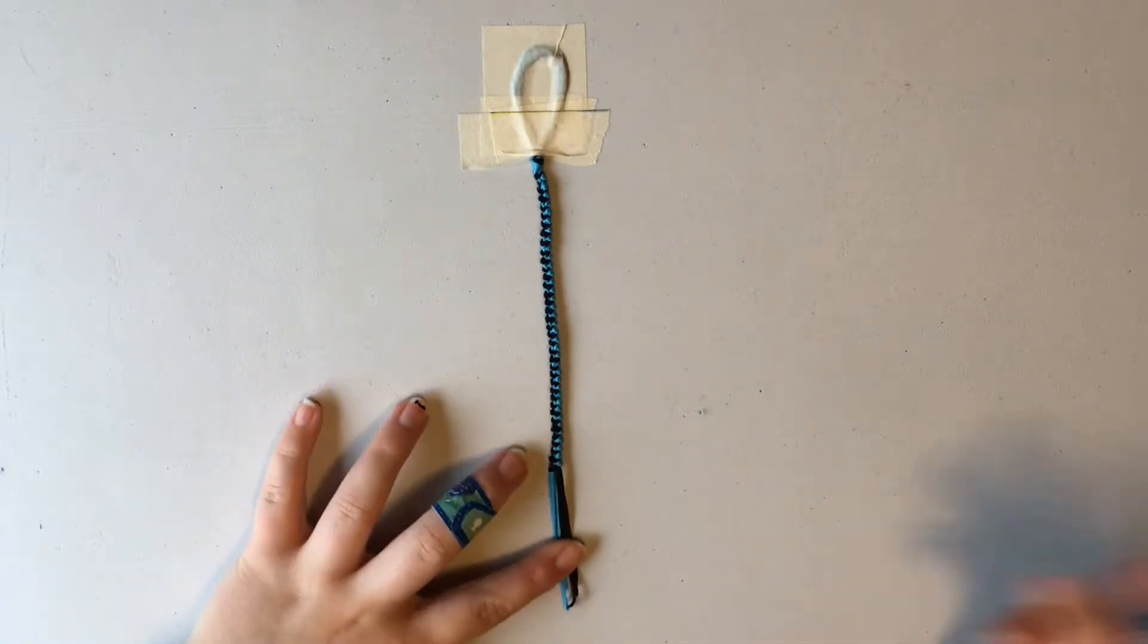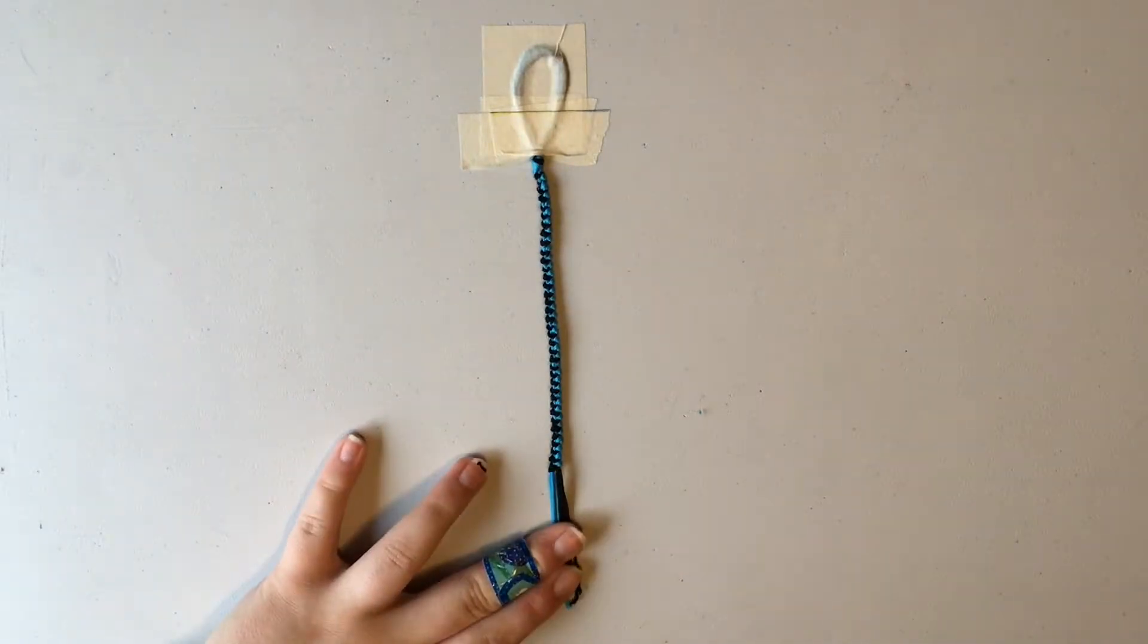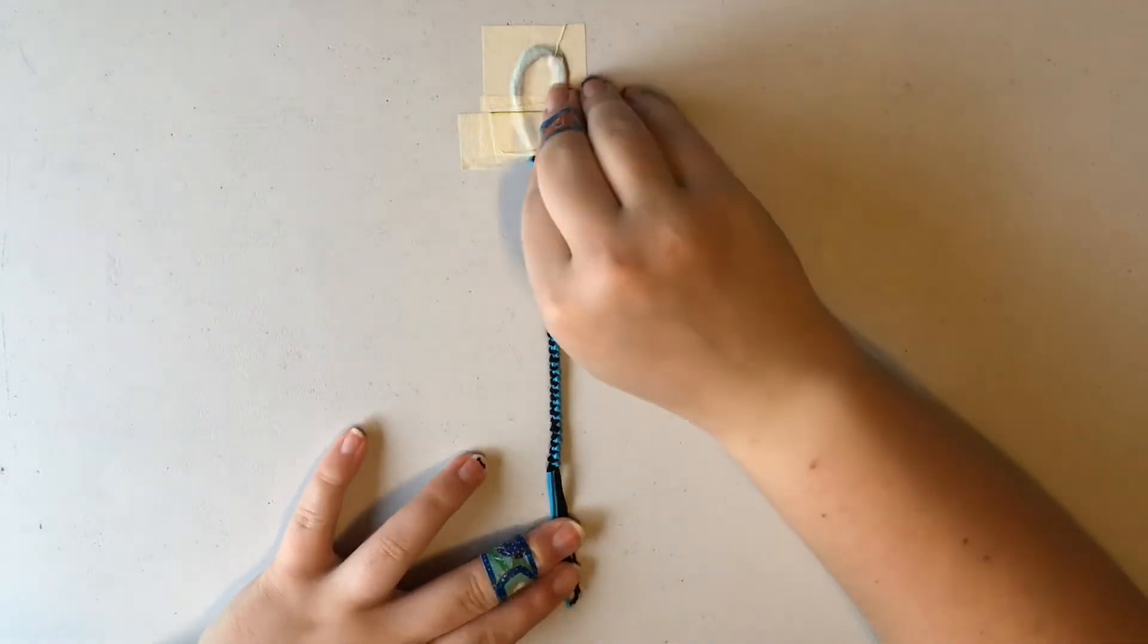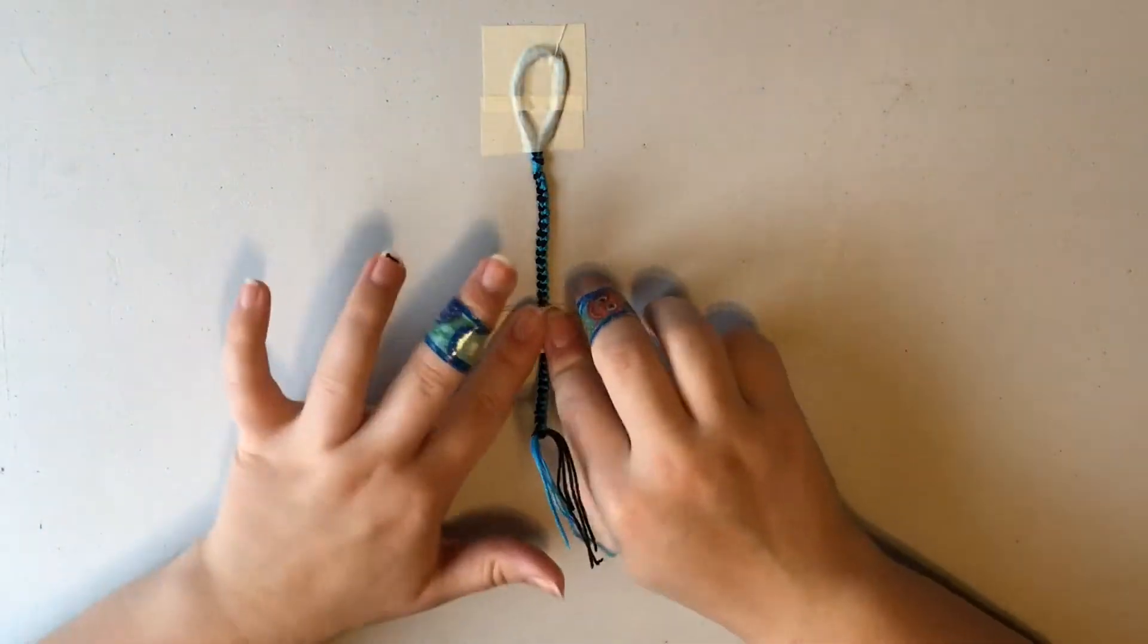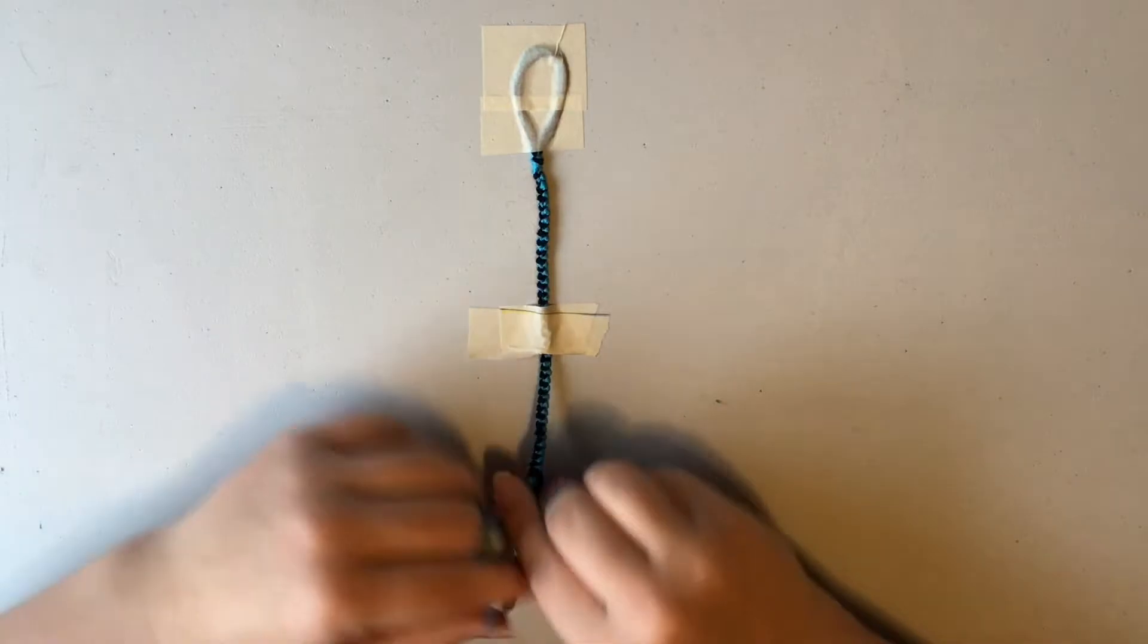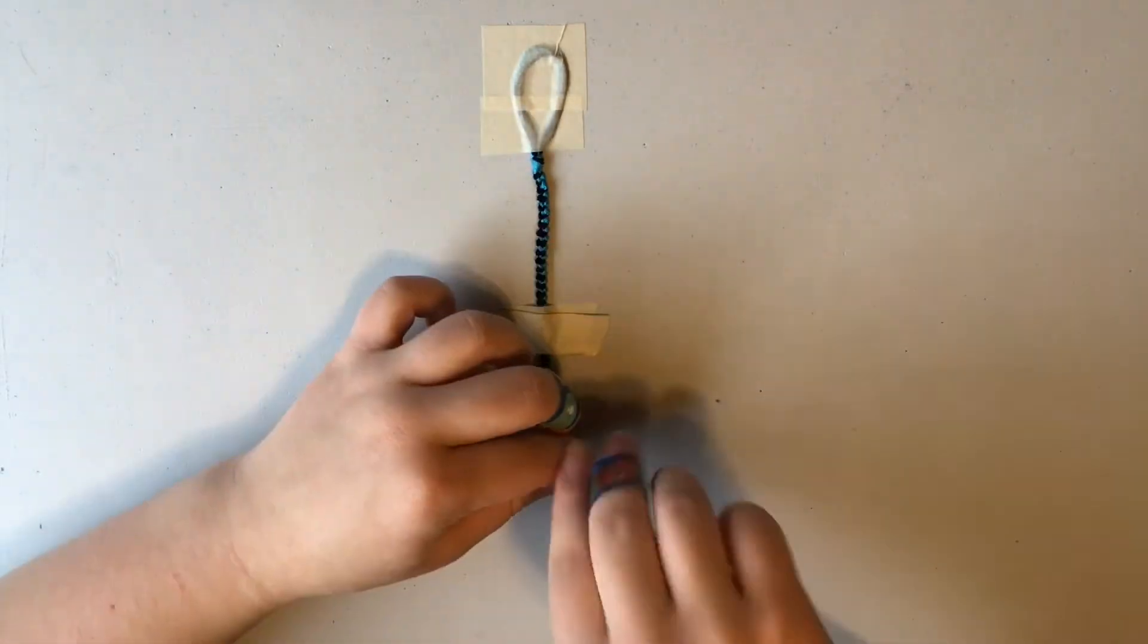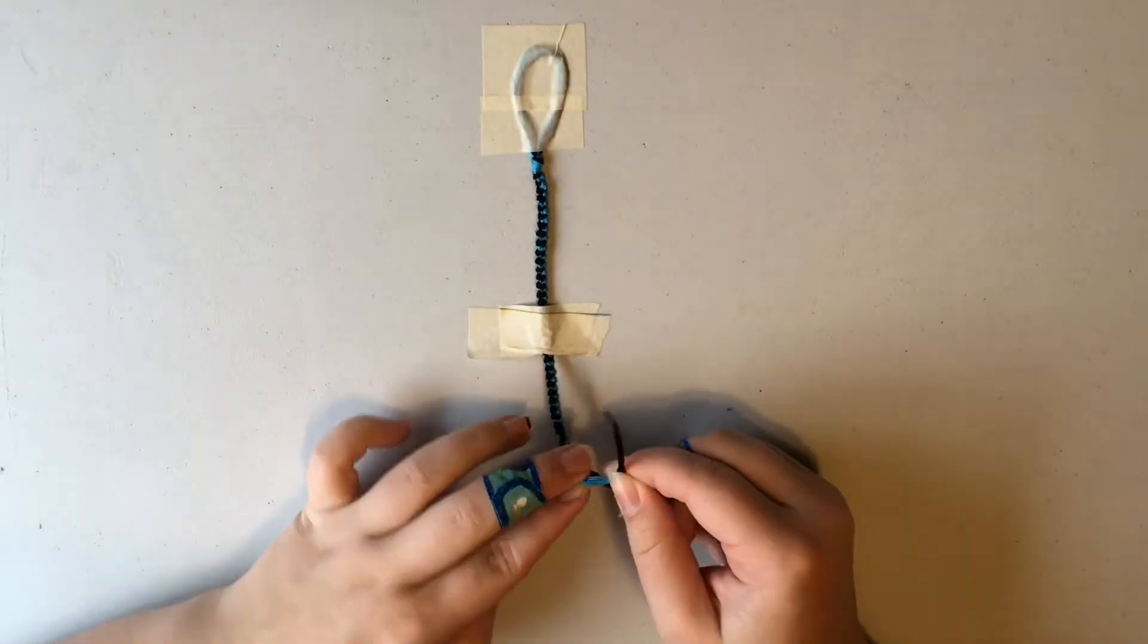Okay, so I am done. I've gotten it to the length that I want it at. So I'm just going to take a piece of tape and put it farther down the bracelet and then make a regular knot.